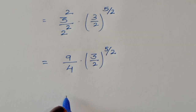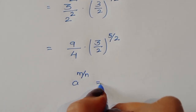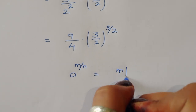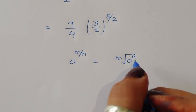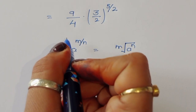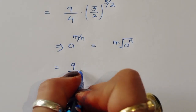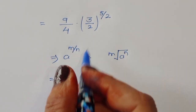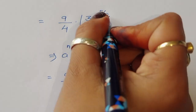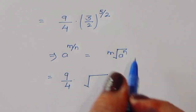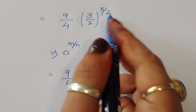Now we apply the formula: a^(m/n) equals the n-th root of a^m. Using this formula, (3/2)^(5/2) becomes the square root of (3/2)^5, since the denominator is 2. So we write square root of (3/2)^5.